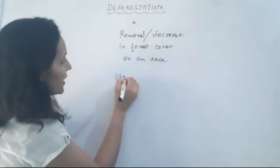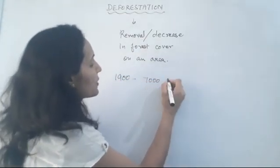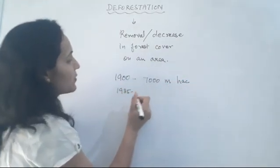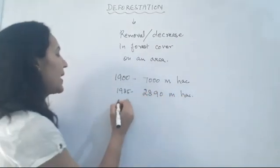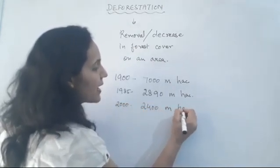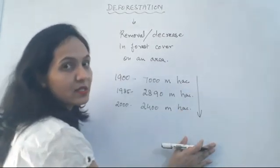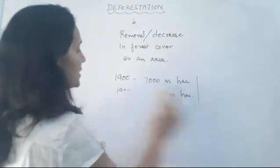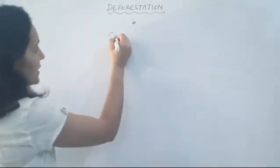If you look century over century, in 1900 the forest cover was supposed to be 7,000 million hectares. By 1985 it was reduced to 2,819 million hectares, and by the year 2000 it was further reduced to 2,400 million hectares. There is a major decrease in forest cover due to human activities.